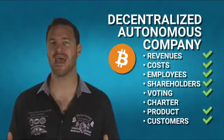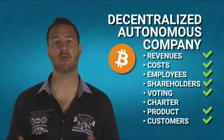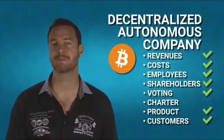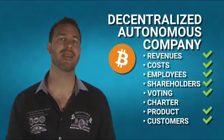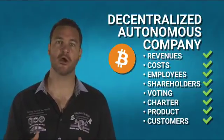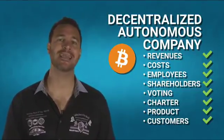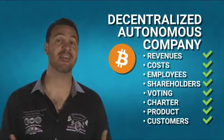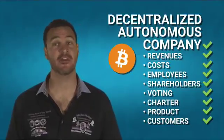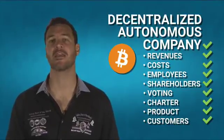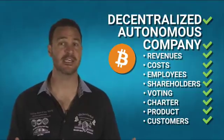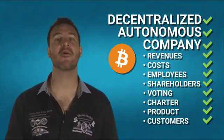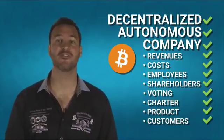Through the lens of a DAC, this is not desirable. It would be preferable if the shareholders had voting rights. Bitcoin has a charter — that is the Bitcoin code that all parties agree to operate by. As you can see, the analogy of Bitcoin being a company is very useful and quite accurate. Bitcoin is also decentralized and autonomous, and therefore Bitcoin is the world's first DAC.